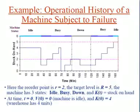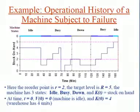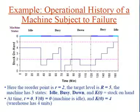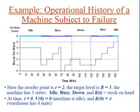At time t equals 75, the unit that started processing at time t equals 65 is finished — since it takes 10 minutes — and proceeds to the warehouse, giving k(75) equals 1. At time t equals 85, another unit is finished. At time t equals 87, the machine fails.